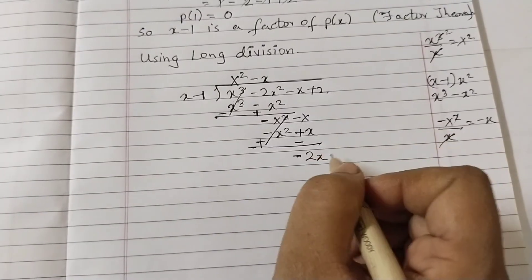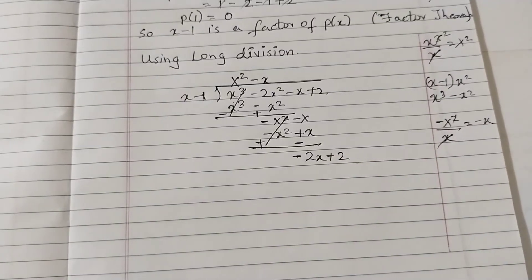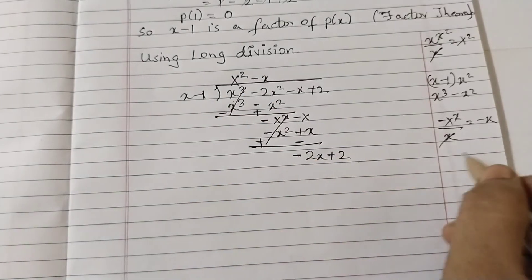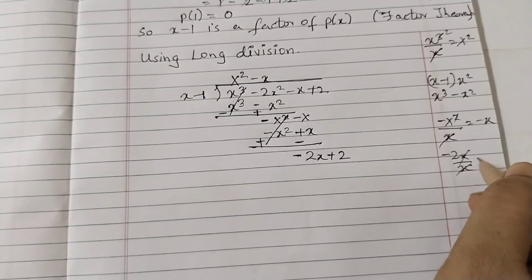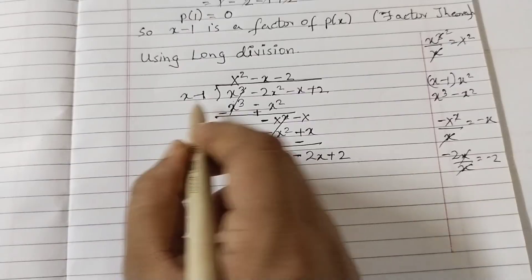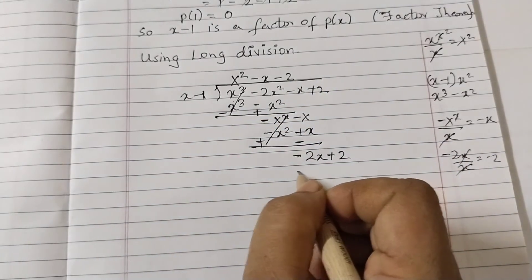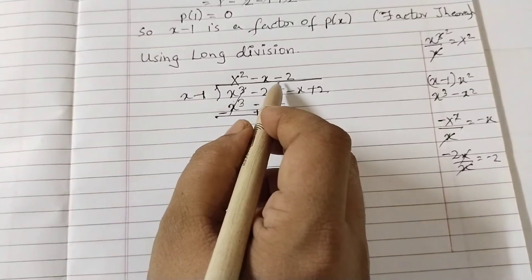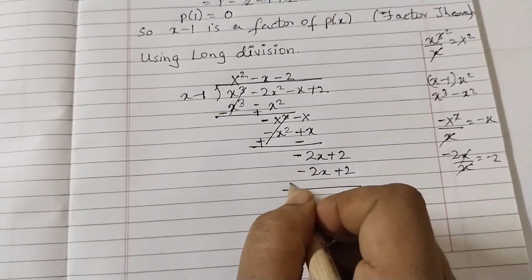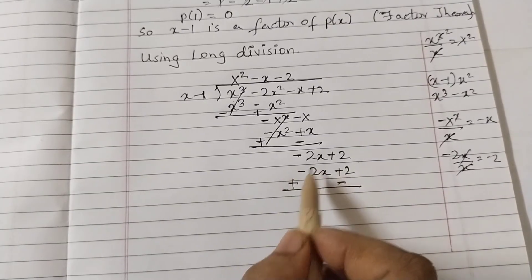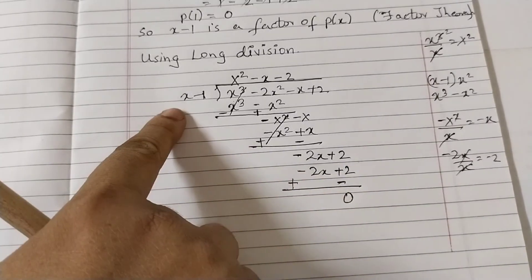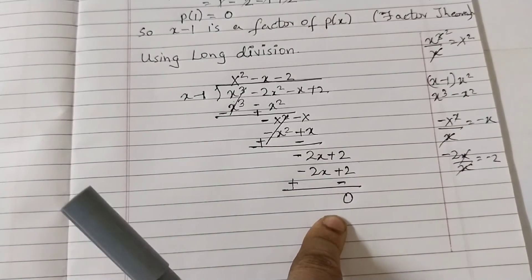Bring down the next term plus 2. Now we need to find what to multiply by x minus 1 to get minus 2 x. Minus 2 x divided by x gives minus 2 — the third term of the quotient. Multiply x minus 1 by minus 2: minus 2 x and plus 2. Subtract — sign changes. Minus 2 x plus 2 x gives 0, and plus 2 minus 2 gives 0. So the remainder is 0 — obviously x minus 1 is a factor.